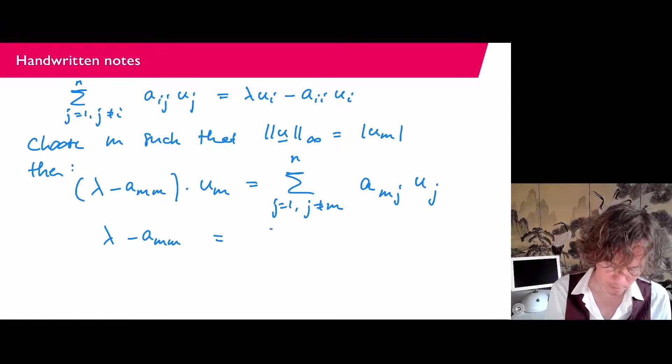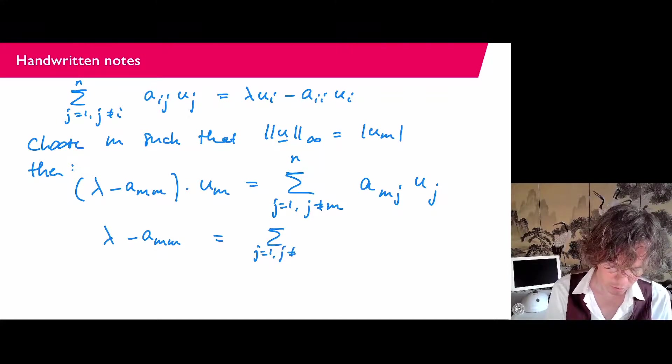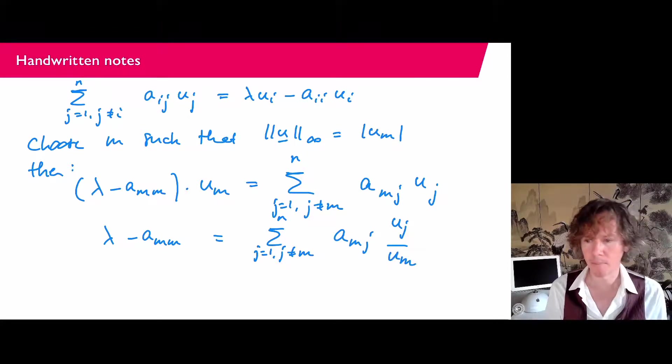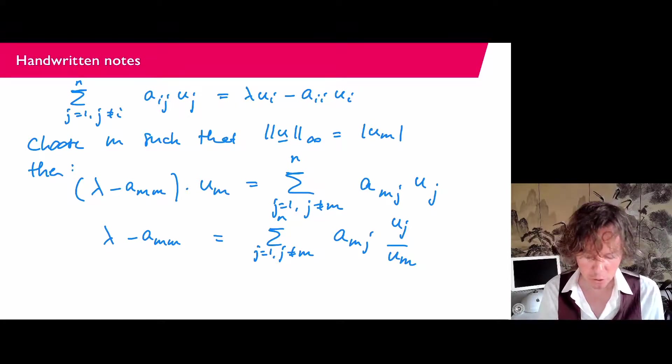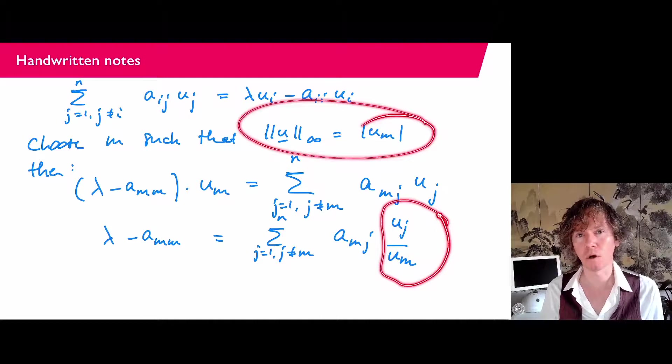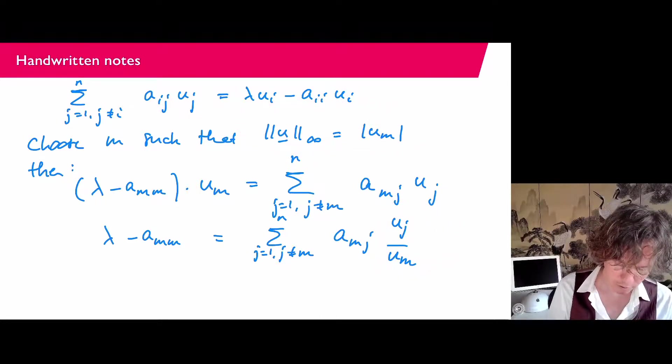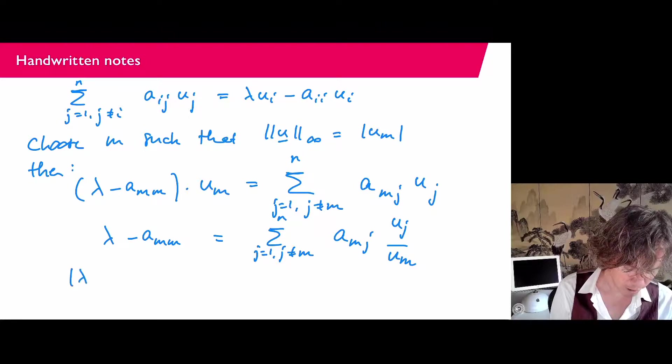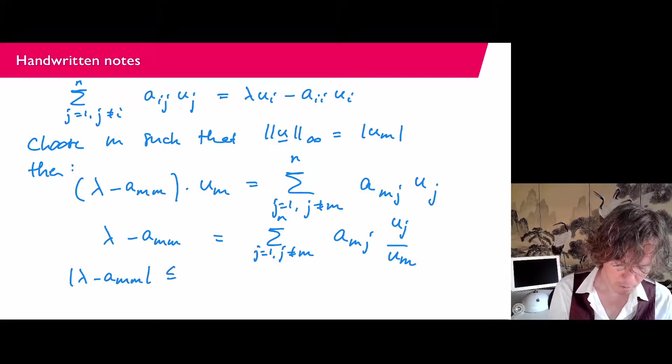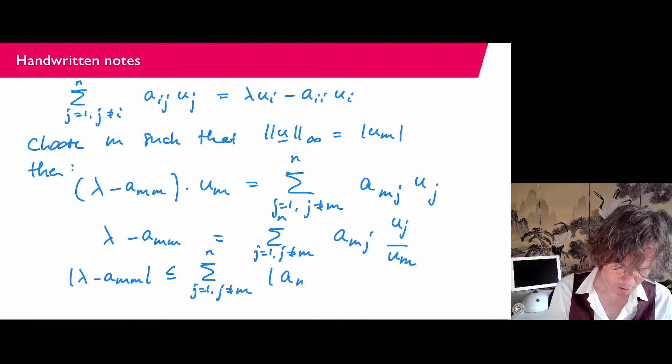So now let's divide by U_M. So this is the sum j is 1, j not equal to M, up to n, A_MJ U_J over U_M. And now I'm going to take absolute values. And then you see that the reason that I picked the maximum one here is that the absolute value of these fractions are going to be less than 1.